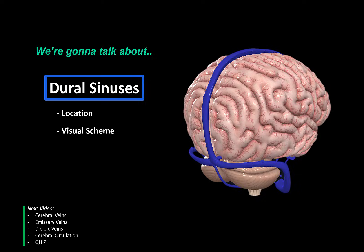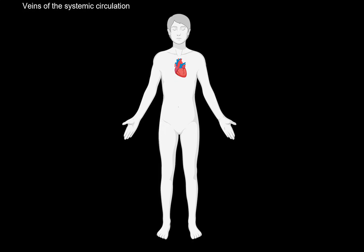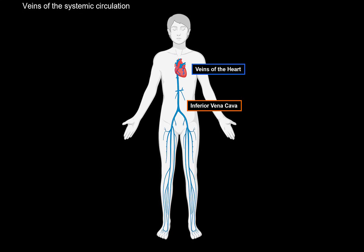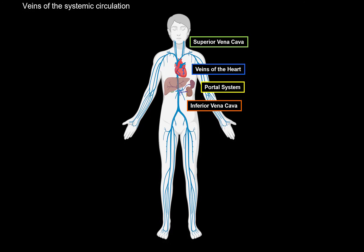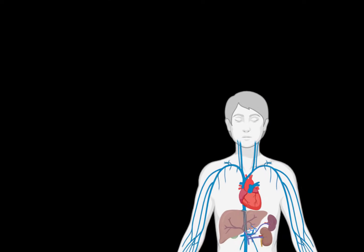The veins of the systemic circulation consist of four kinds of systems: you have the veins of the heart, the veins of the inferior vena cava, the veins of the superior vena cava, and the portal system. The dural venous sinuses we're going to go through drain into the superior vena cava.